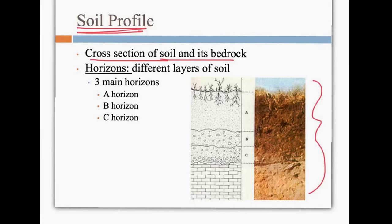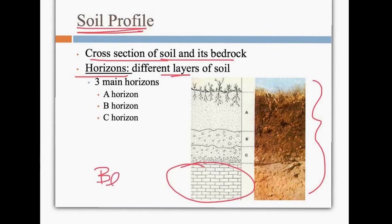The soil profile ends up having different layers or horizons. There are three main horizons we're going to talk about — A, B, and C — and then the bricks at the bottom are called bedrock.